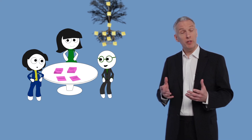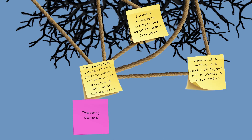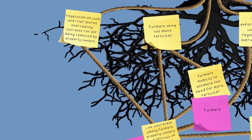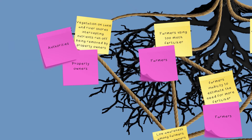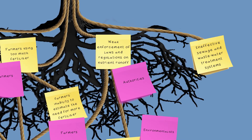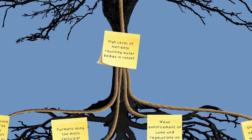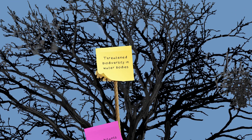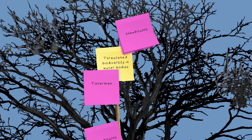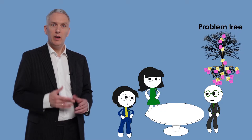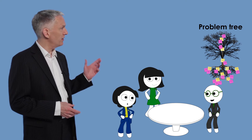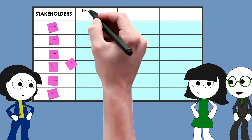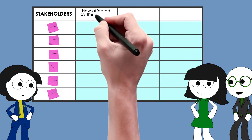The team maps who is affected by which problem — property owners, authorities, farmers, environmentalists, and inhabitants each appear against relevant issues. They place these in a matrix, trying to imagine how each stakeholder group will be affected by the identified problems.